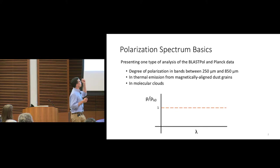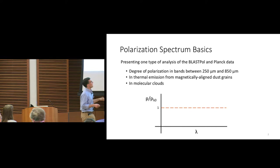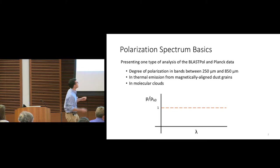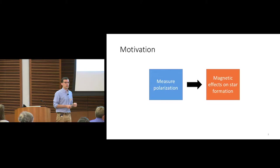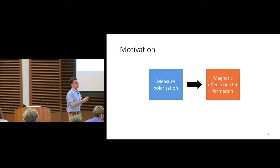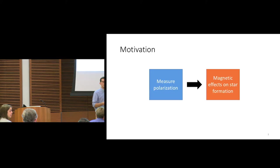I'm going to show a lot of plots that have degree of polarization — little p on the y-axis — and wavelength lambda on the x-axis. We're going to normalize this little p by the polarization degree at some wavelength, so you'll see a line at 1. This is because we want to look at the shape of the polarization spectra — how does it vary across wavelengths? With this, we can eliminate effects that might be due to inclination of the magnetic field along the line of sight.